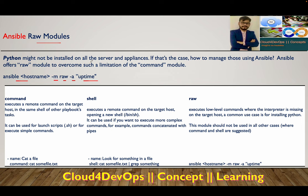The raw module overcomes the limitations of the command module. If you're not supposed to install Python on your managed node, you can still use Ansible to manage that server using the raw module. You don't have to worry about being unable to manage servers that don't have Python.